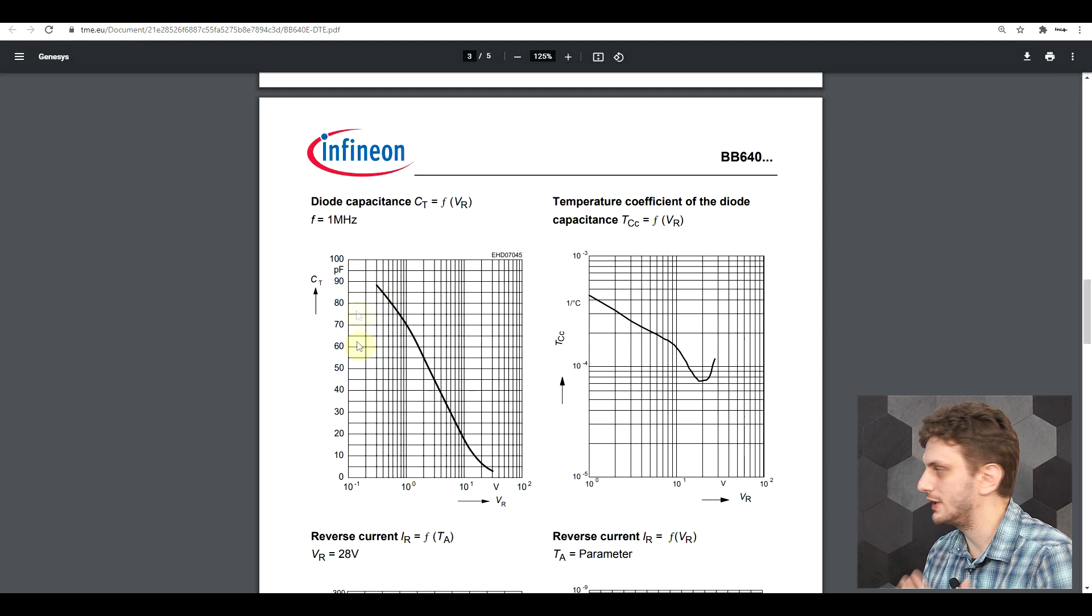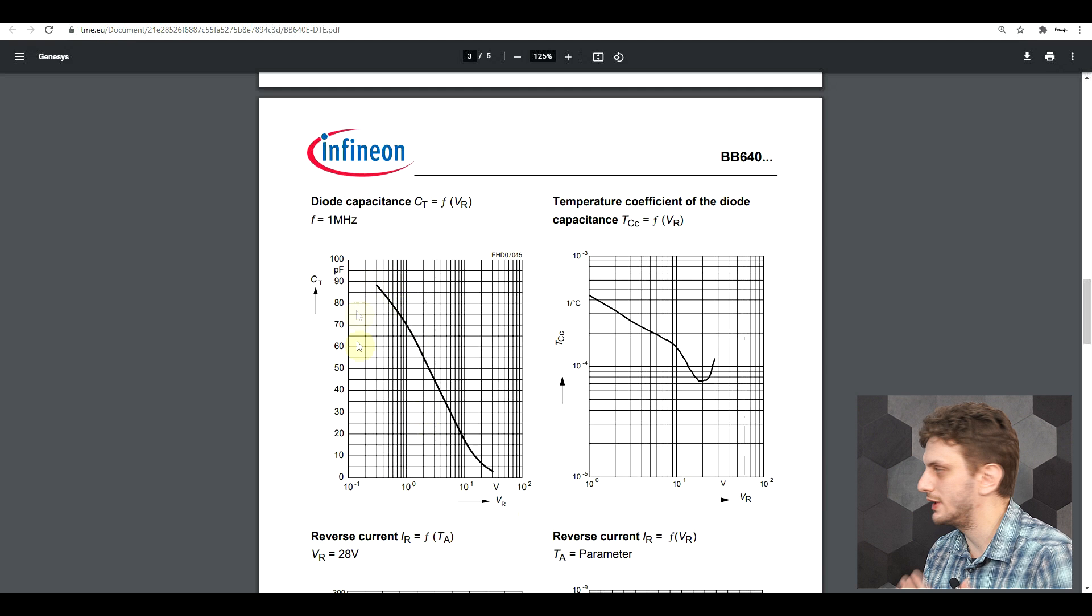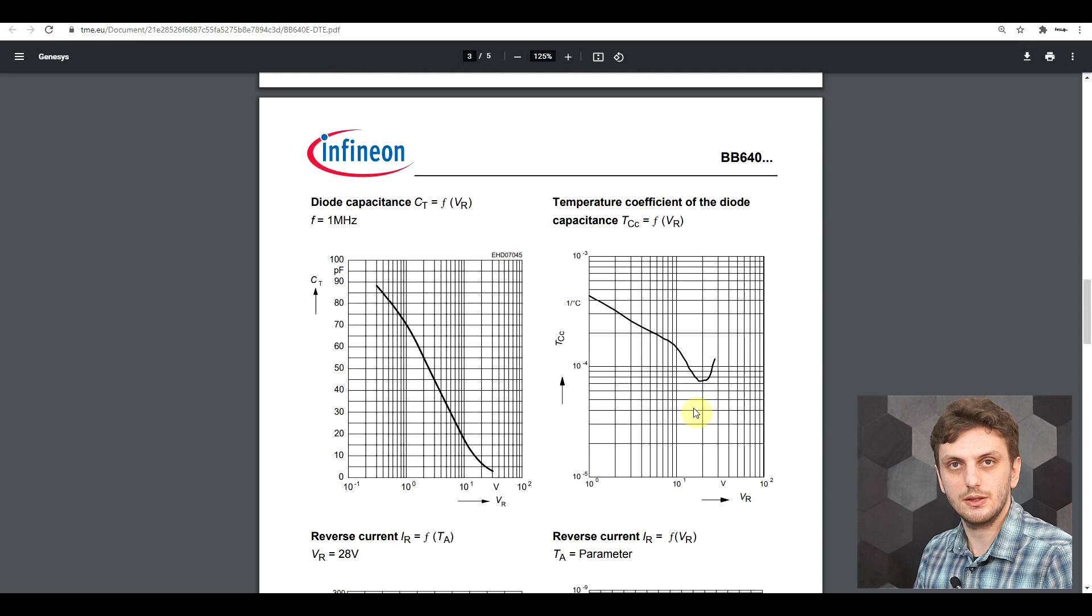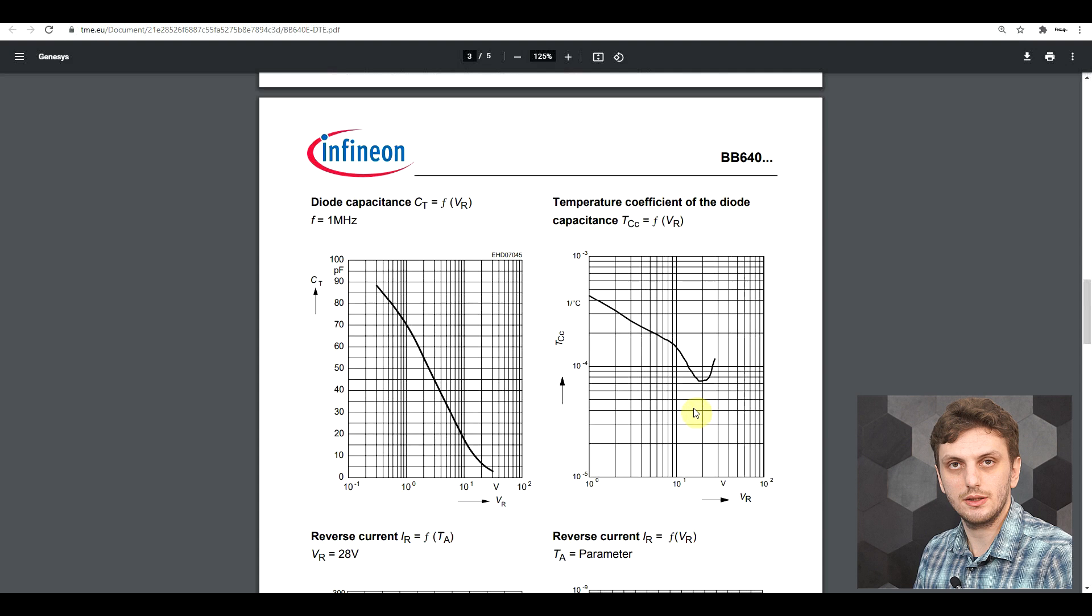But we can also find a dedicated graph where we have every single voltage and every single capacity inserted. So we can see exactly just how linear the variation of the capacity is with the applied voltage. And of course, we get all sorts of other data regarding how well two diodes can be matched, so what are their tolerances.